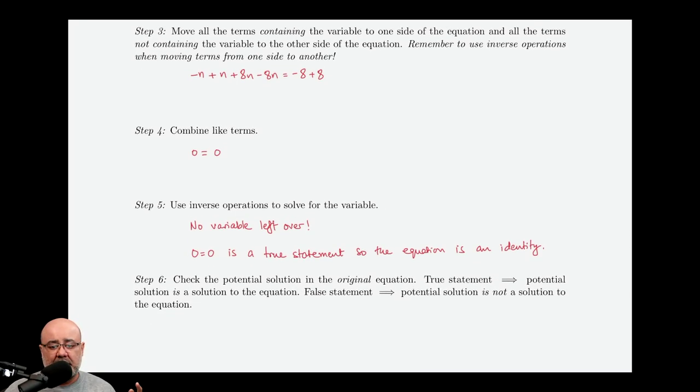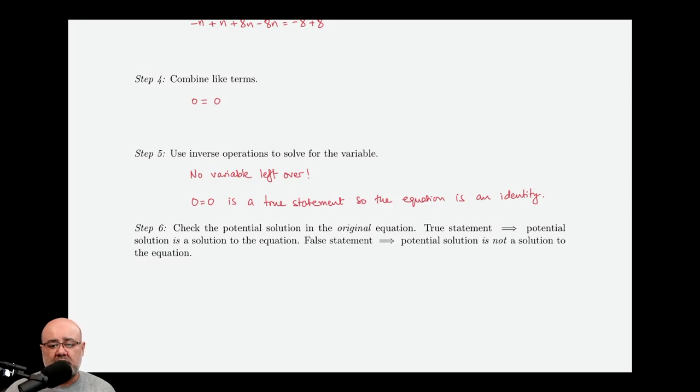And just like the previous example, there's no potential solutions to check. We don't have any values of n that popped out as potential solutions that we need to even bother checking in the original equation. So, that's it. This is just an identity. Any value of n will make this equation true. It has infinitely many solutions.